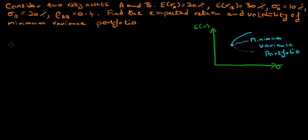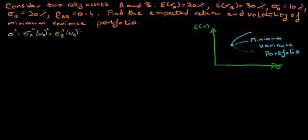Let's begin with the definition of variance of a portfolio with two risky assets. Variance of the portfolio equals the variance of asset A times the weight of asset A squared, plus the variance of asset B times the weight of asset B squared, plus two times the volatilities of A and B times the weights of A and B times the correlation between A and B. This follows from the definition of variance of a portfolio that has two assets.